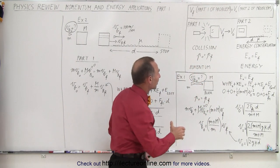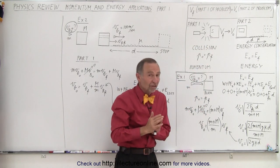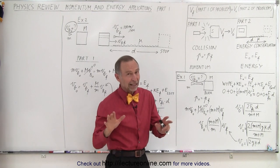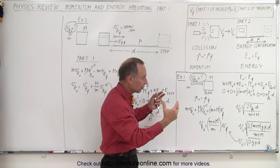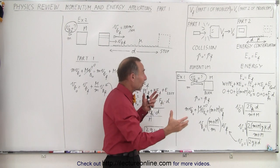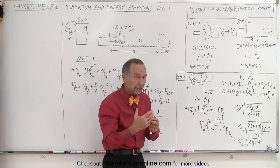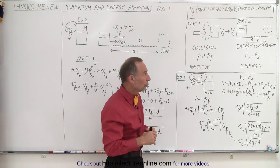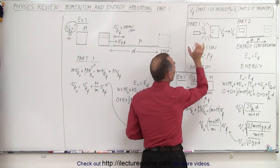Essentially what we have here is a collision. Whenever there is a collision, energy is essentially never conserved, except in physics books when we talk about a perfectly elastic collision. So we can assume that in a collision energy will be lost, and unless we know all the parameters of the initial and final velocity of every component in the collision, we will not know how much energy is lost. So we can only use the conservation of momentum in part one of the problem.